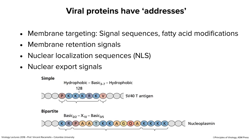Another principle is that viral proteins, just like cell proteins, have addresses. One of the first people to discover addresses was Gunter Blobel, who just died a couple of days ago — he discovered signal sequences at the N-terminus targeting proteins to the endoplasmic reticulum. There are many signals on proteins to send them to different places. Membrane-targeting signals include the signal sequence, fatty acid modifications that target proteins to the plasma membrane without the secretory pathway, membrane retention signals, nuclear localization signals, and nuclear export signals.